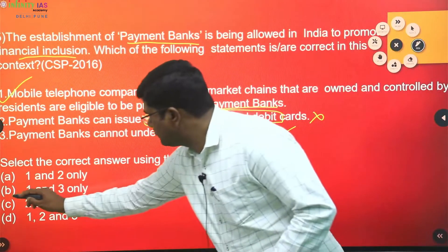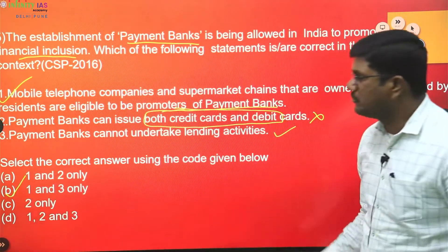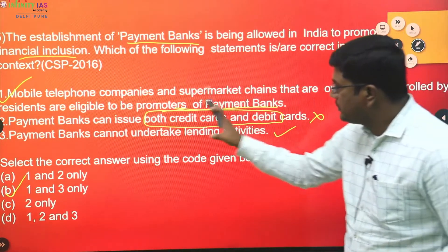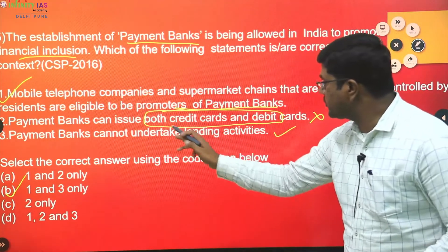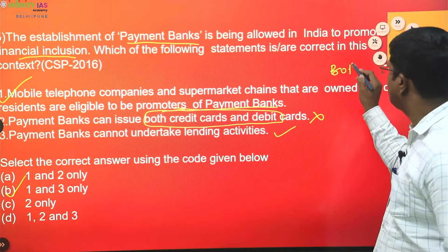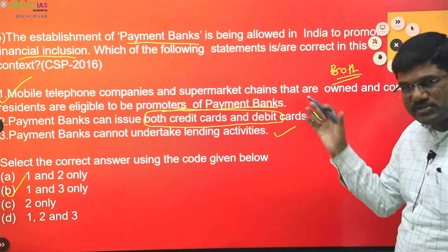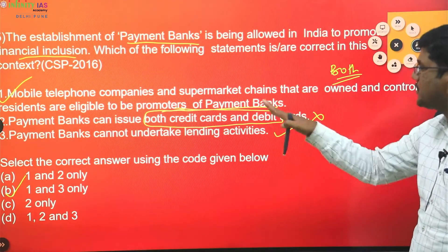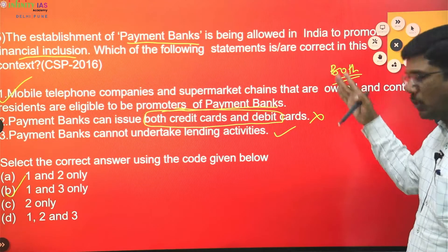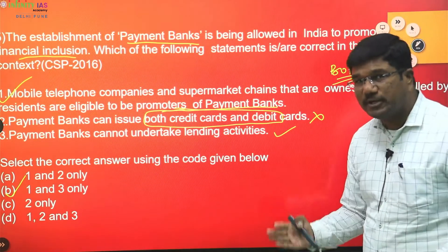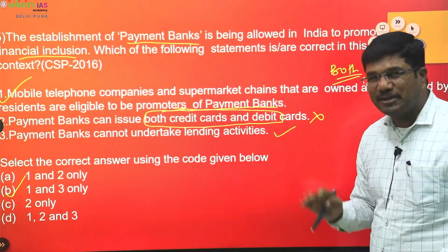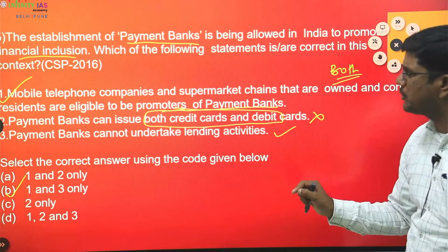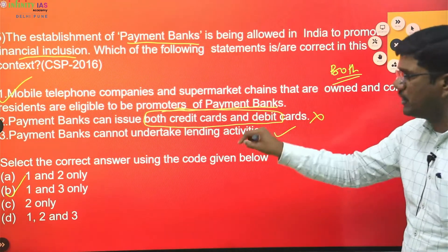Therefore the answer is one and three only. The key point here is that when you see the word 'both' in a statement — like 'both credit cards and debit cards' — take doubt. These kinds of words are a marker that the statement may be wrong. Use this strategy when you have little knowledge and still want to attempt the question.